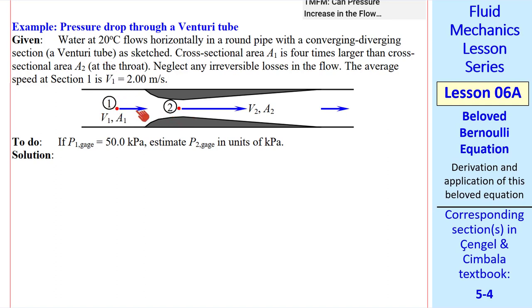This is water, which is incompressible. So speed V2 has to be bigger than speed V1. In this case, we have water at 20 degrees C. Area A1 is four times larger than cross-sectional area A2 at the throat.